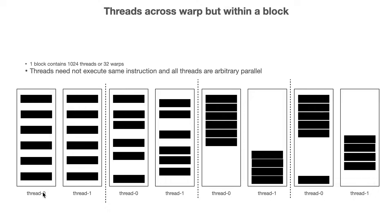Here we have shown four different scenarios where we can clearly see that instructions can be arbitrarily parallel. In one case, thread zero finishes all its work and then thread one executes. In another case, thread zero executes some instructions, then thread one finishes completely, and then thread zero continues. You can think of other possible scenarios as well.